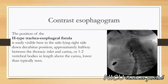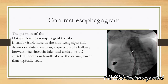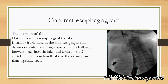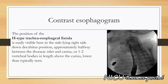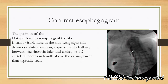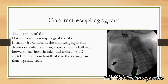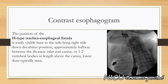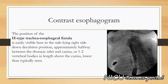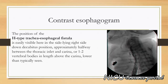Oral bedside nasoendoscopy was negative. A contrast esophagogram was performed. This is a modified contrast study performed by a speech pathologist. The infant is given a small amount of thin liquid contrast from a bottle, initially in the upright seated position and subsequently in the side lying position on a fluoroscopy table. After several swallows, a large amount of contrast was seen in the trachea, which appears to arise from below, suggestive of either massive gastroesophageal reflux or from an H-type tracheoesophageal fistula. Contrast is also seen in the more distal airways.